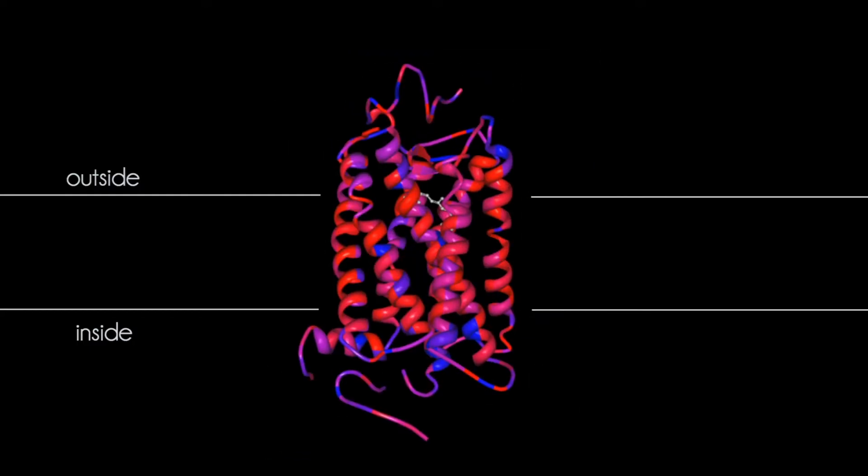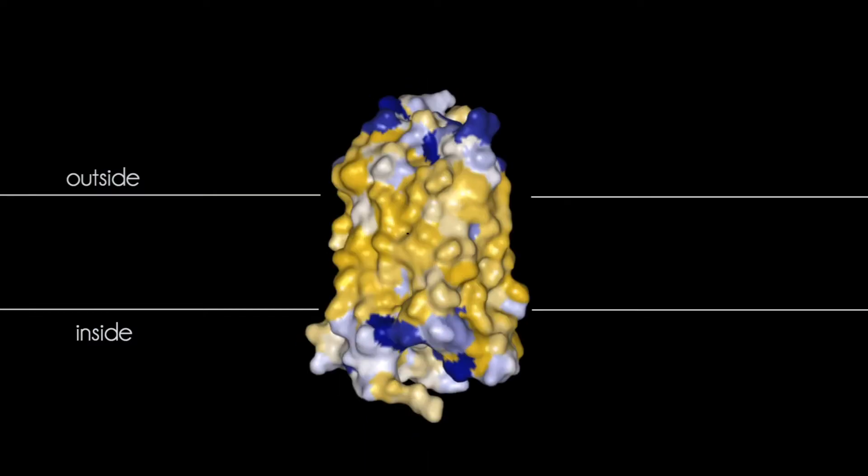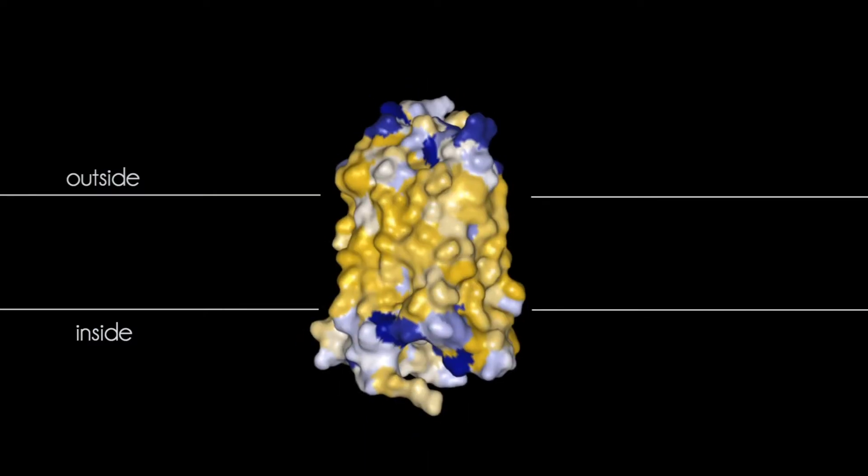The transmembrane region contains the most hydrophobic residues, shown in red, while the extracellular and cytoplasmic loops contain more hydrophilic residues, shown in blue. The hydrophobic core allows the protein to sit within the nonpolar membrane of rod cells.